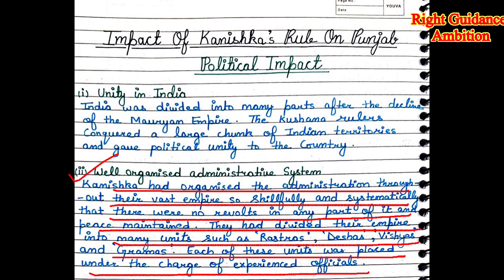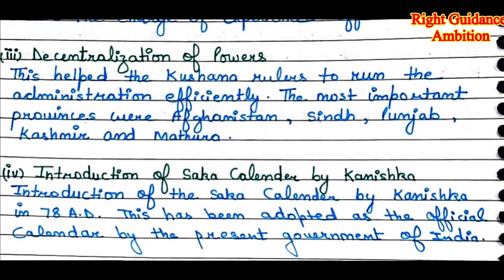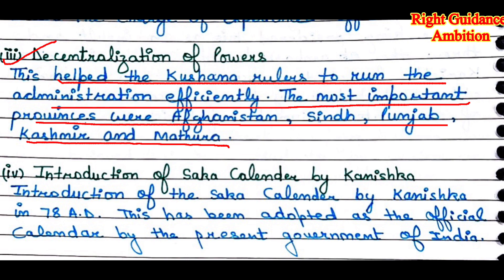The Kanishka rulers divided their empire into many units — similar to how India today has states. Each of these units was placed under the charge of experienced officials who were responsible for implementing rules and regulations and taking proper care of their area.